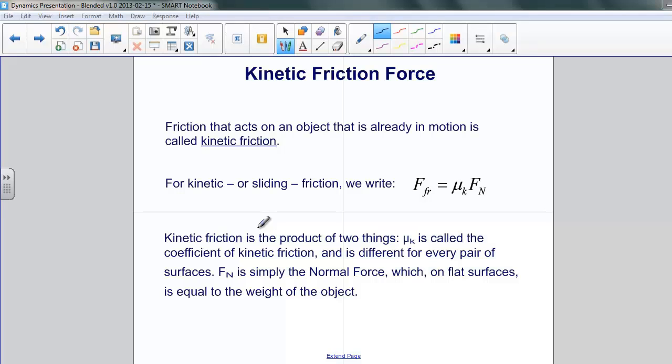For kinetic, also known as sliding friction, we have a simple equation which says that the force of friction is proportional to, through this constant, the normal force. Now, for horizontal surfaces, the normal force is just the same as the weight of the object.